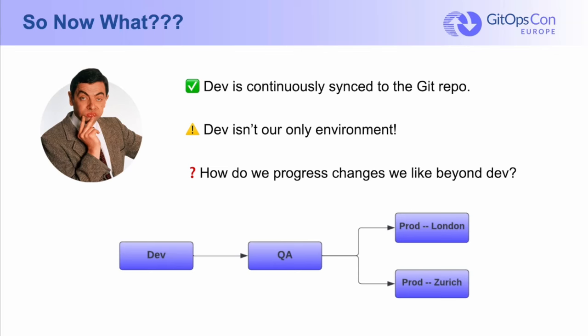It's pretty unlikely that dev is our only environment. So let's be a little bit more realistic while not overcomplicating things. We'll say we also have an instance of the same application running in a QA environment and instances in each of two production environments. So here it is — an example of the titular multi-stage deployment pipeline. And in our experience, this is where most people encounter their biggest pain point with GitOps. If we like the state of the instance running in dev, how exactly can we promote that state to QA?